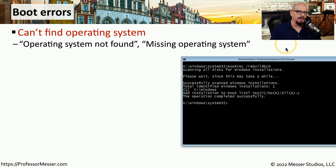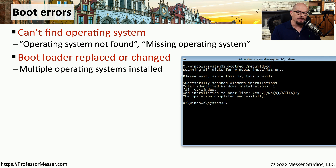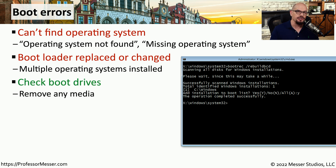Another common problem is starting your system and getting a message that says operating system not found or missing operating system. This might occur if you have multiple partitions on a storage drive configured for different operating systems. In that situation, the issue may be with the bootloader being improperly configured. Before making any changes, confirm that all of your boot drives are properly connected, and if you have any USB drives, remove those and try rebooting your system.